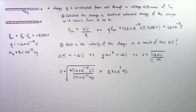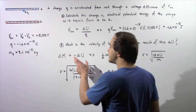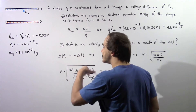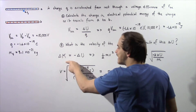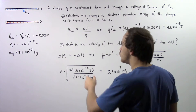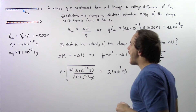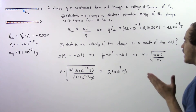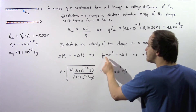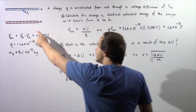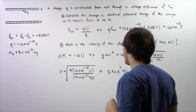What is the velocity of the charge as a result of this loss in electric potential energy? All the electric potential energy that is lost is gained by the kinetic energy. So the change in kinetic energy equals the negative of the change in electric potential energy, which becomes one half mv squared since the initial velocity is zero.